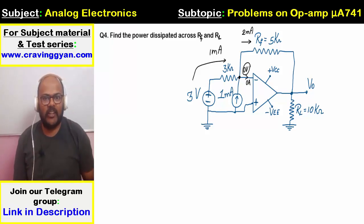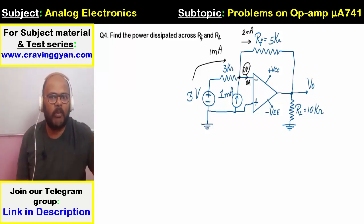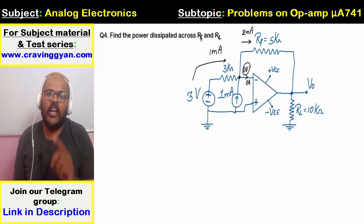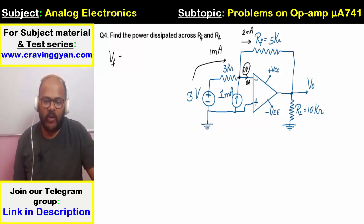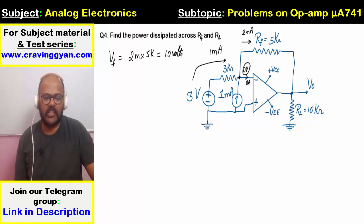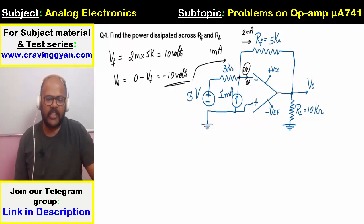The feedback voltage is 2mA × 5kΩ = 10 volts. So Vout = 0 − 10 = minus 10 volts. Although they don't ask for gain or output voltage directly — what they ask is the power dissipation.